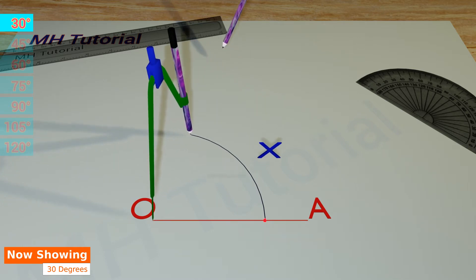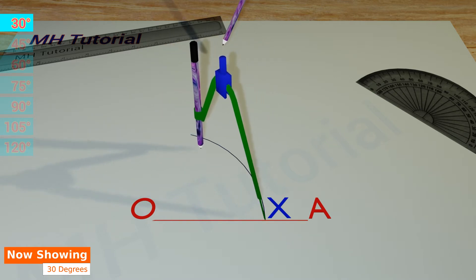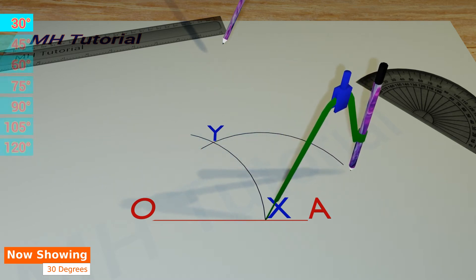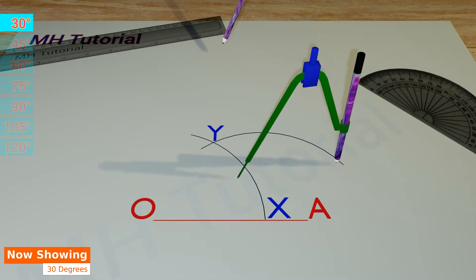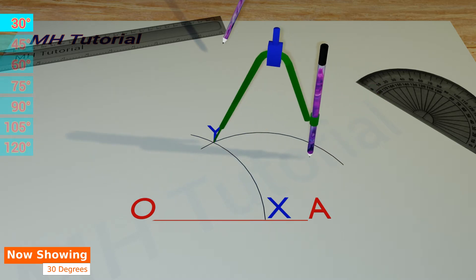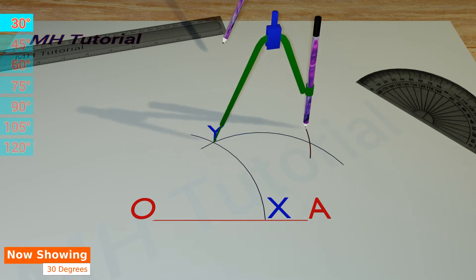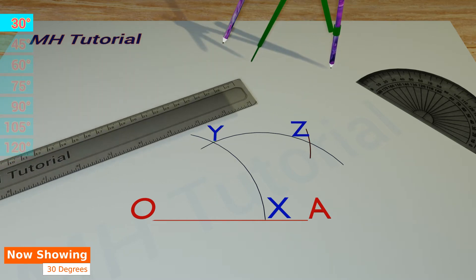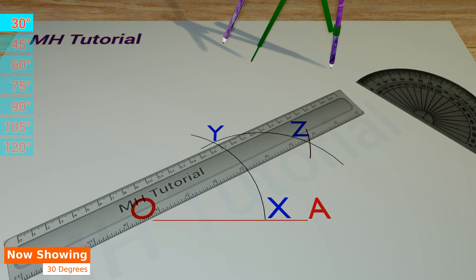The arc intersects the straight line OA at the point X. Then another circle arc of the same radius is drawn with the tip placed at point X, made slightly larger — it intersects the previous arc at point Y. After that, put the tip of the compass at point Y and draw an arc of the same radius to get an intersection against the second arc. This point of intersection is point Z. Now align the ruler about point O and point Z and draw a line segment between them.